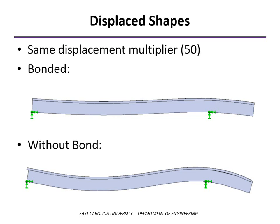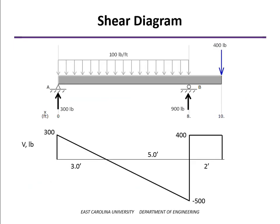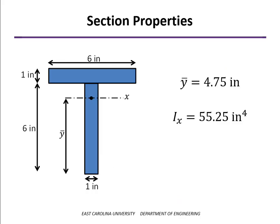So it is important that the glue or fasteners be able to resist the shear stresses present at the bond line. From the shear diagram we calculated earlier, the highest magnitude of shear force is 500 pounds, occurring at support B. The section properties have also been calculated: the neutral axis is 4¾ inches above the bottom of the beam, and the moment of inertia is 55¼ inches to the fourth.